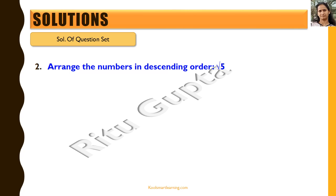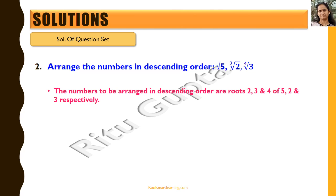Let's now move on to the second question of the advanced level. We need to arrange these numbers in descending order: the square root of 5, the cube root of 2, and the fourth root of 3. Since these numbers cannot be compared directly because the bases and powers are both different, we need to either bring the base or the exponent to the same value for all numbers.